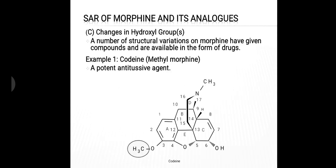The third part is changes in the hydroxyl group. A number of structural changes on morphine have given compounds available in the form of drugs. The first example is codeine. Codeine is a derivative of morphine, also known as methyl morphine. It is a potent antitussive agent. In the structure, at the third position, an OH group is present in morphine, but in codeine a methoxy group is present instead — that is, replace the OH group with a methoxy group — giving codeine with potent antitussive activity.